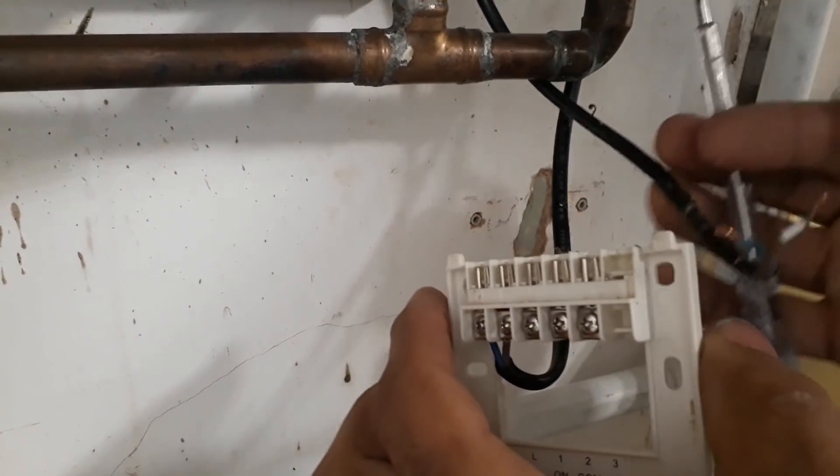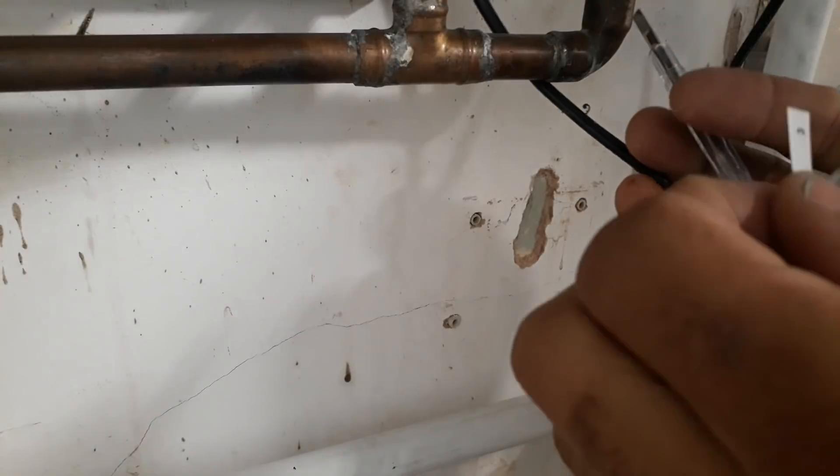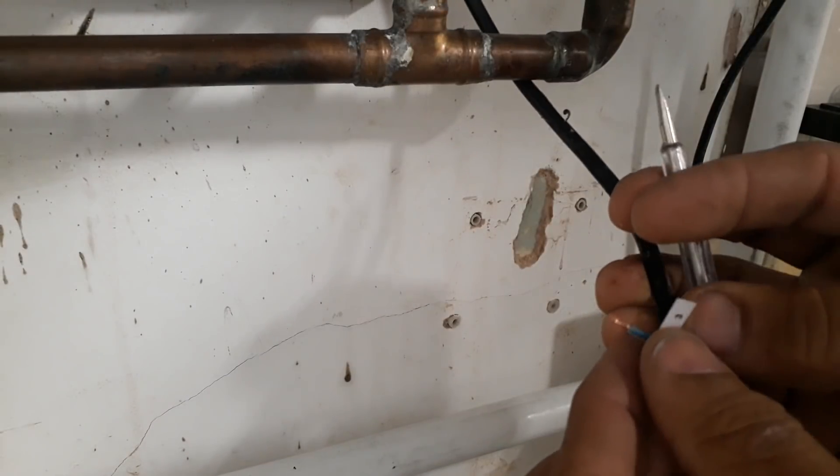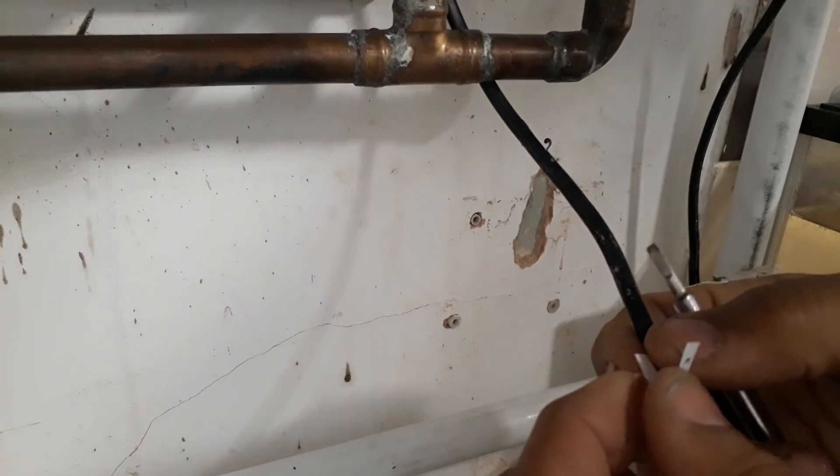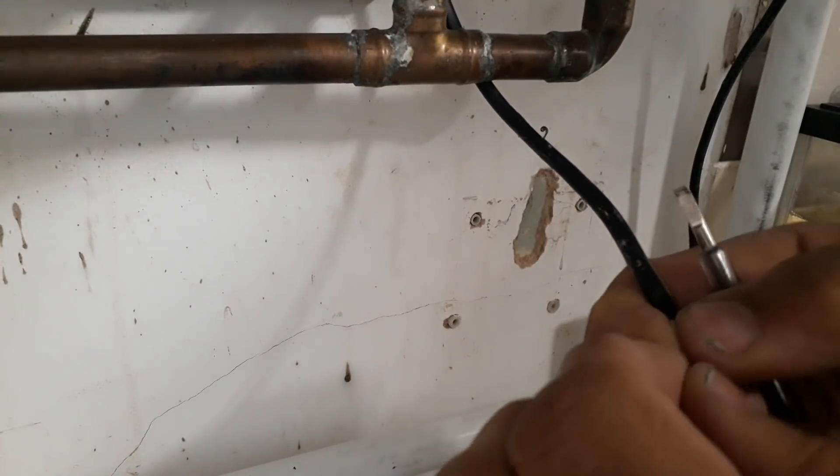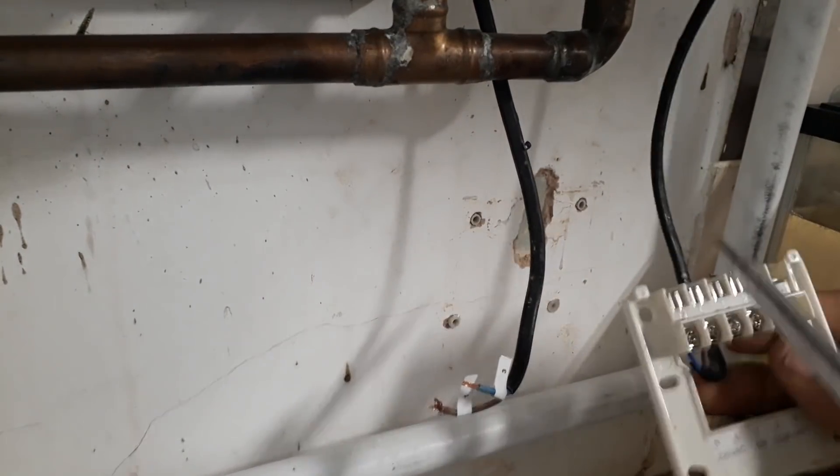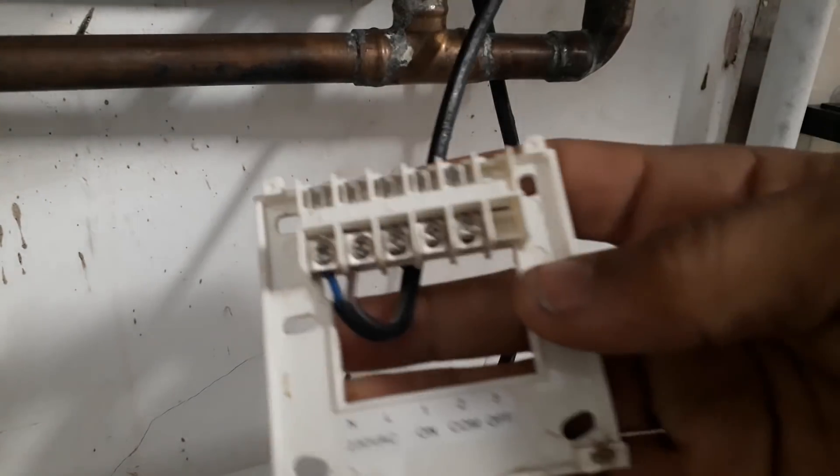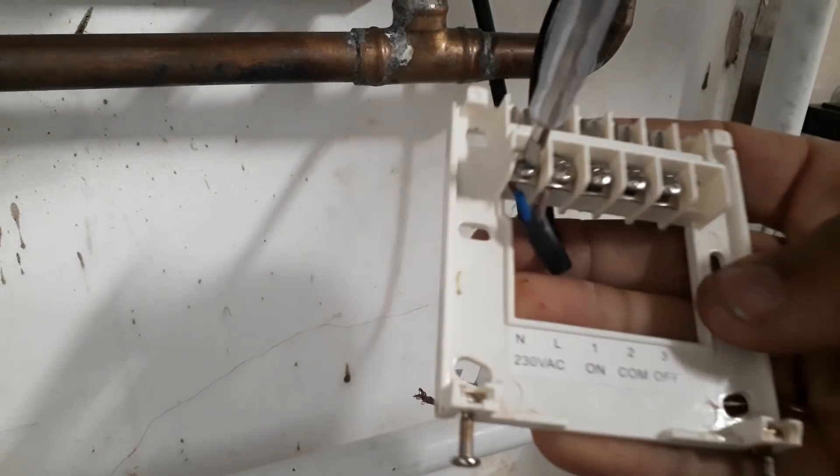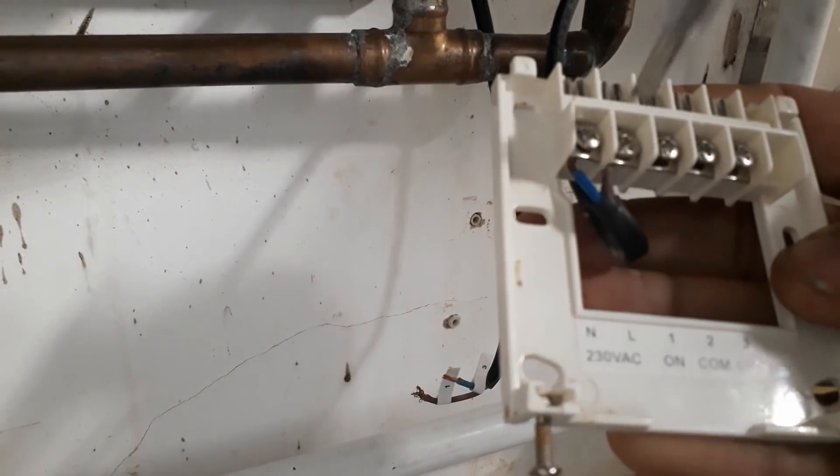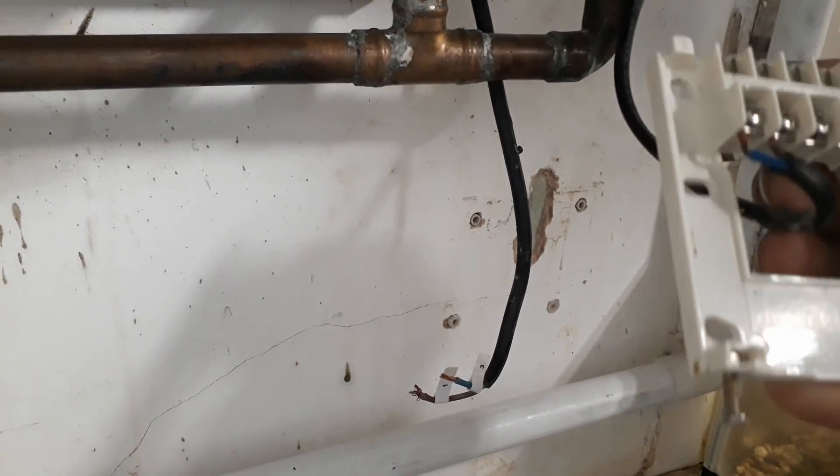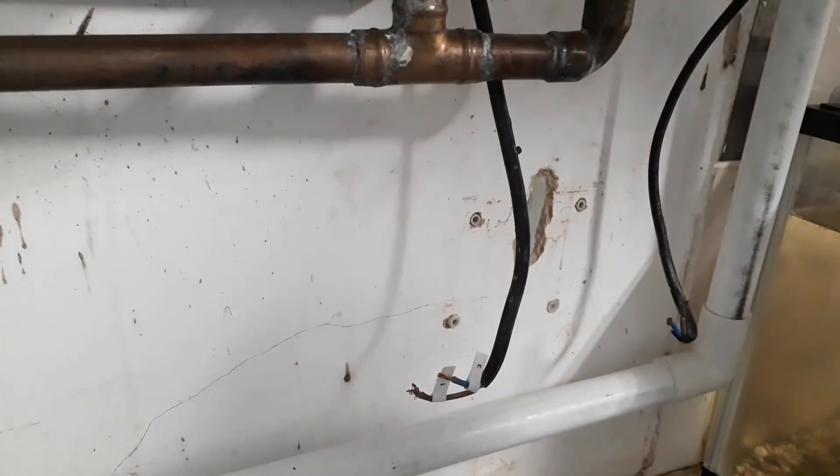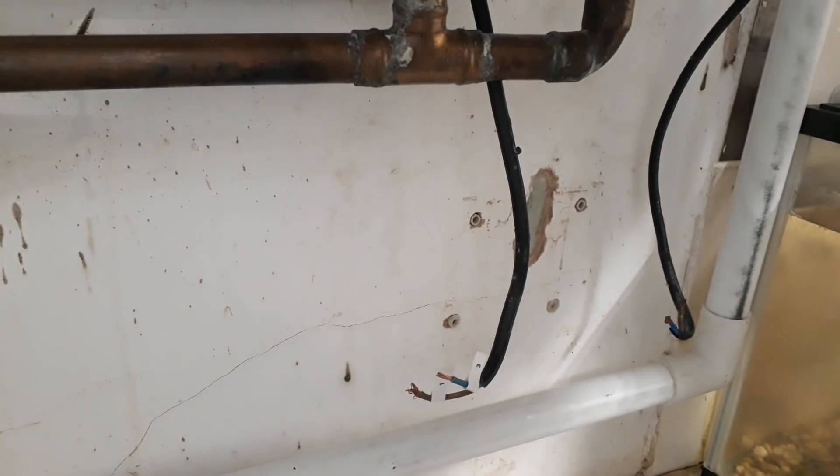This one here we know is number three. There we go, that's number three. Now we know we've got a live and a negative coming straight from that fuse box up there, so we're going to undo those. They're quite straightforward to me because one's blue for negative, one's brown for live. I'll take them out. I would label them up but there's absolutely no need for me. I only need to know the other ones.